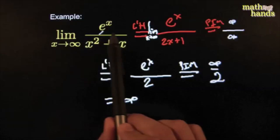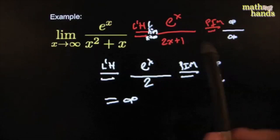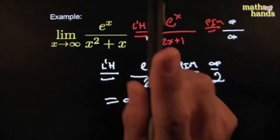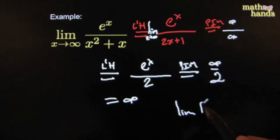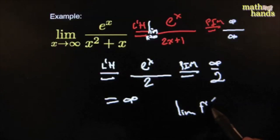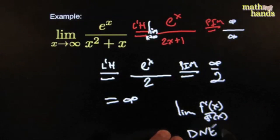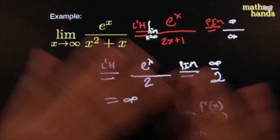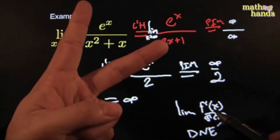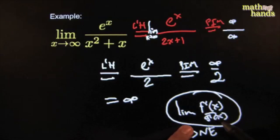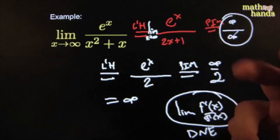Sometimes you have to keep applying L'Hôpital four or five times. Sometimes the process fails. L'Hôpital applies under two key conditions: first, the limit of f′(x)/g′(x) must exist — if at any point that limit does not exist, all bets are off. Second, you must have either infinity over infinity or zero over zero. Those are the two key ingredients.